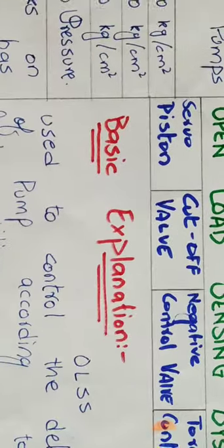OLSS stands for Open Load Sensing System. It consists of a few valves: servo piston and servo valve, cutoff valve (also known as CO valve), NC valve (also known as negative control valve), and TVC (torque variable control valve).